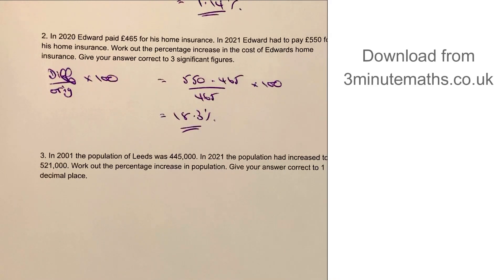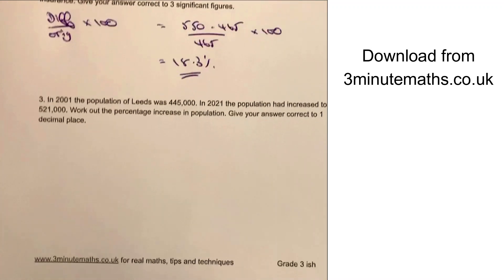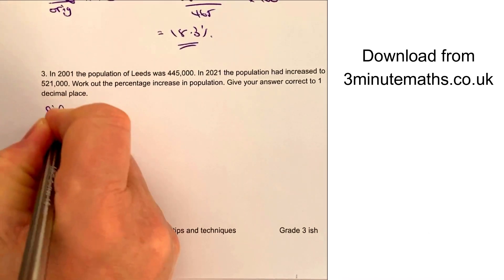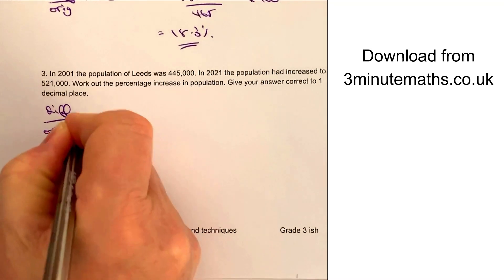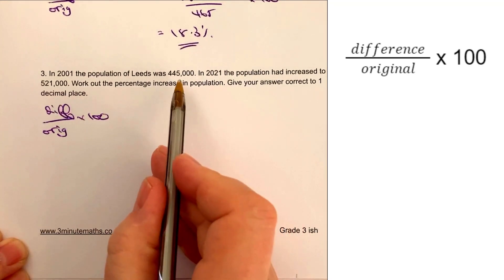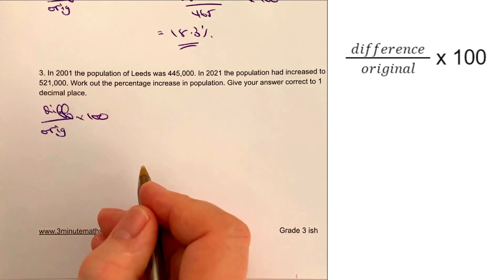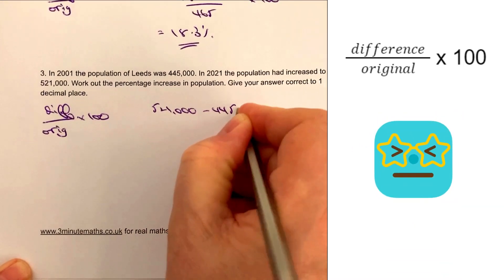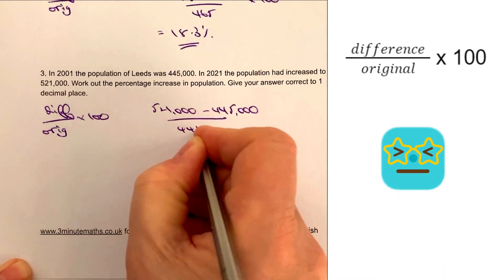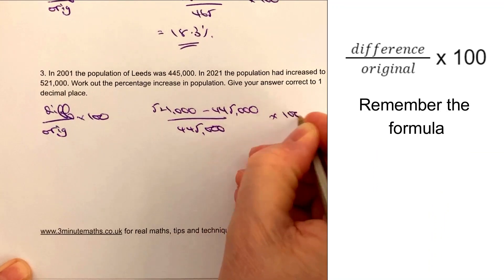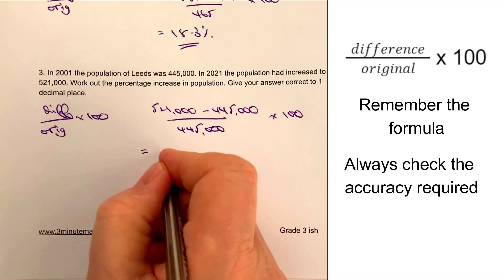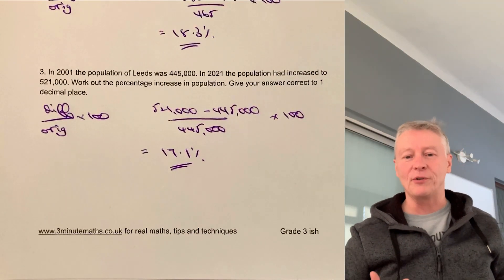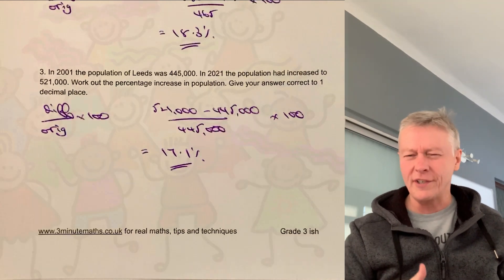Question number three is a population question — very popular for these sorts of problems. We're looking again at difference over original multiplied by 100. It was 445,000 and it's now 521,000. So that's 521,000 minus 445,000, all divided by 445,000, multiplied by 100. Put that in your calculator and you should get 17.1% — the population increased by 17.1% over that one year period, which sounds like a lot.